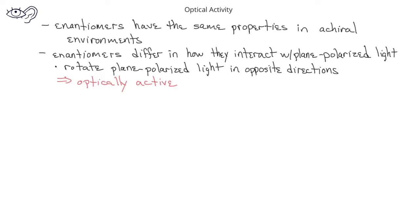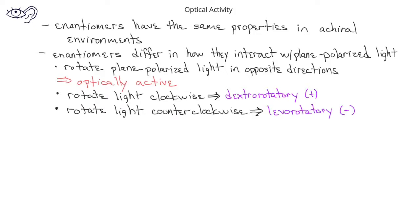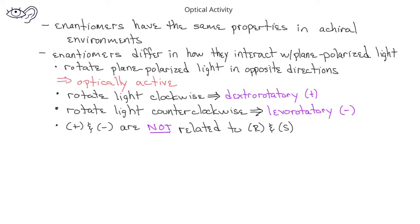If one enantiomer rotates plane polarized light in a clockwise direction, we say that compound is dextrorotatory and it is designated with a plus sign. If a compound rotates plane polarized light in a counterclockwise direction, we say that compound is levorotatory and we designate that with a minus sign. You should be careful to remember that the plus and minus signs for the direction that plane polarized light is rotated are not directly related to the structural configurations indicated by the R and S designations. Plus and minus indications are determined with a polarimeter, while the R and S designations are determined based on structural features.